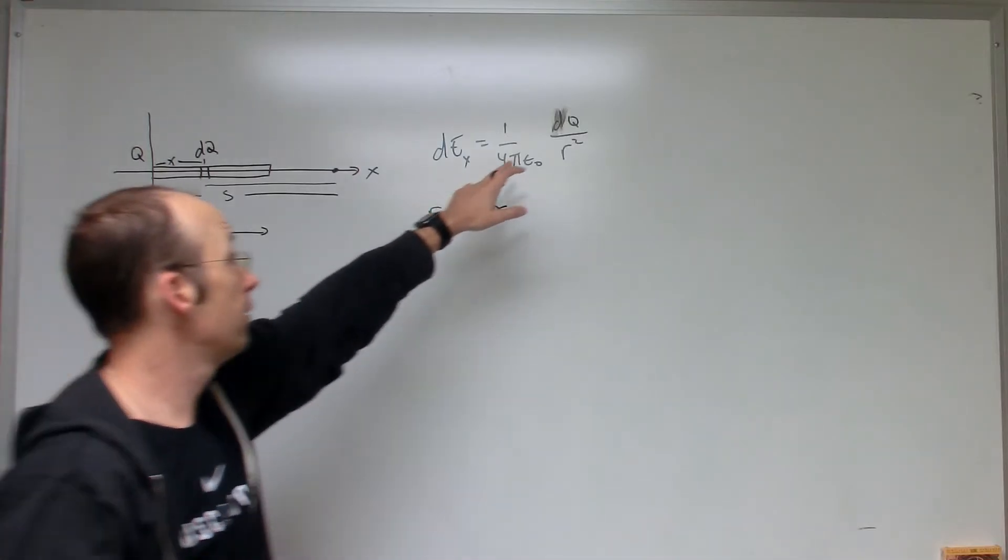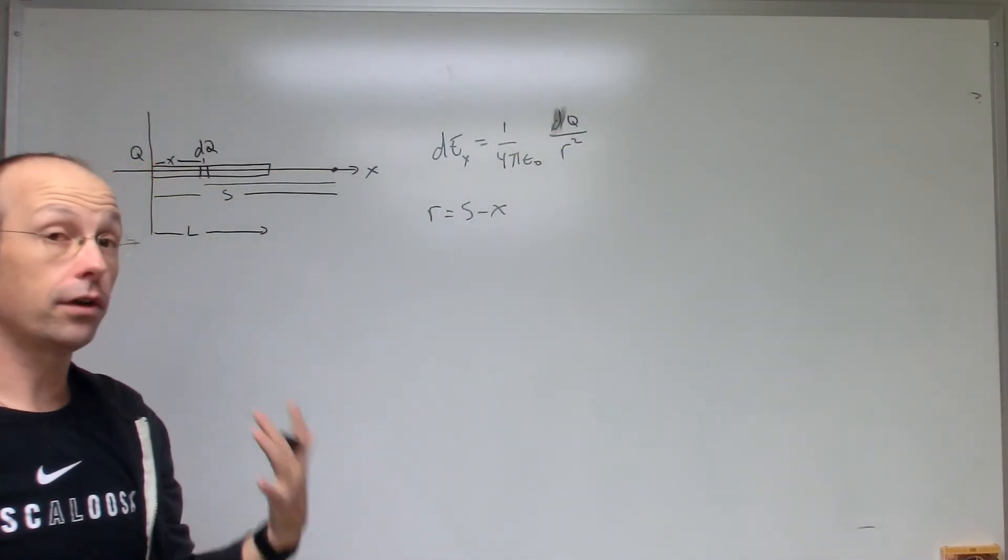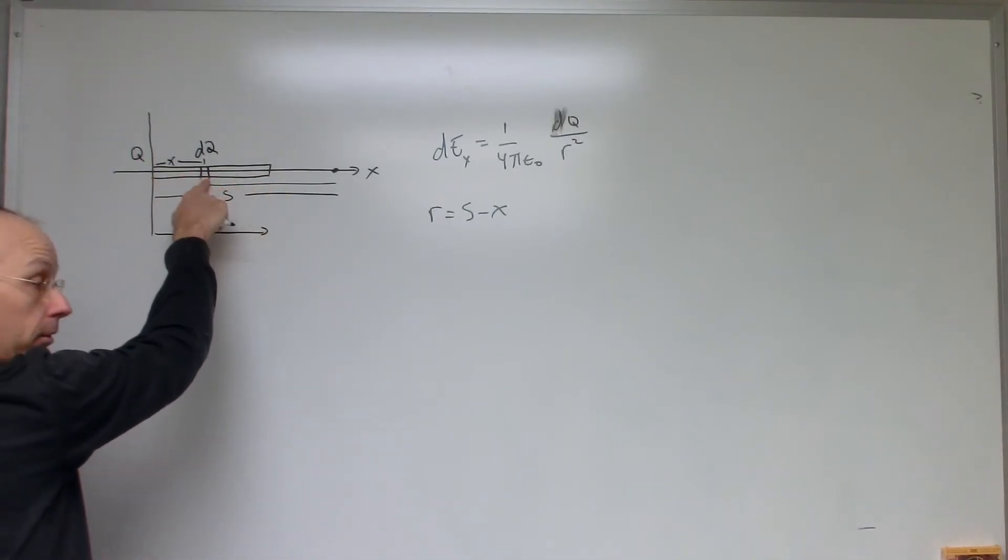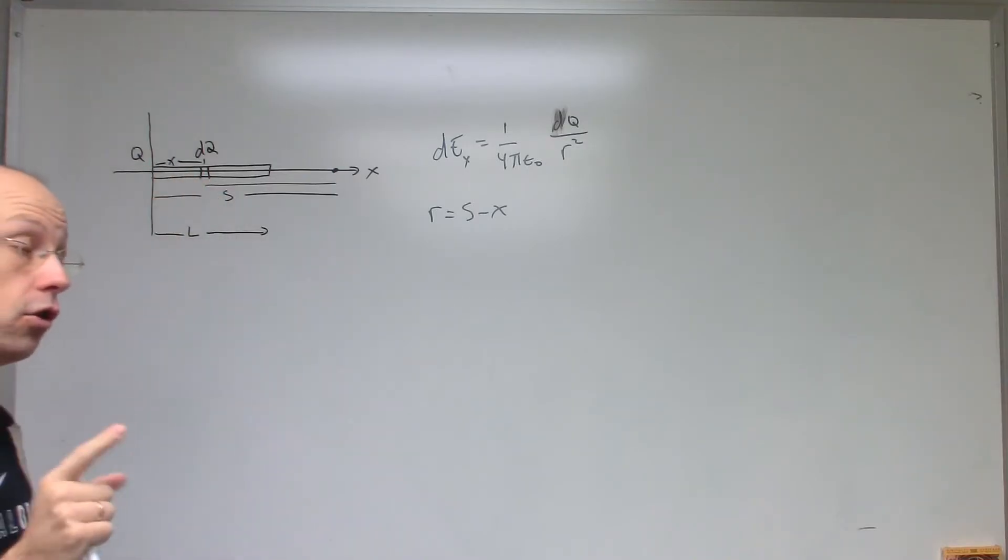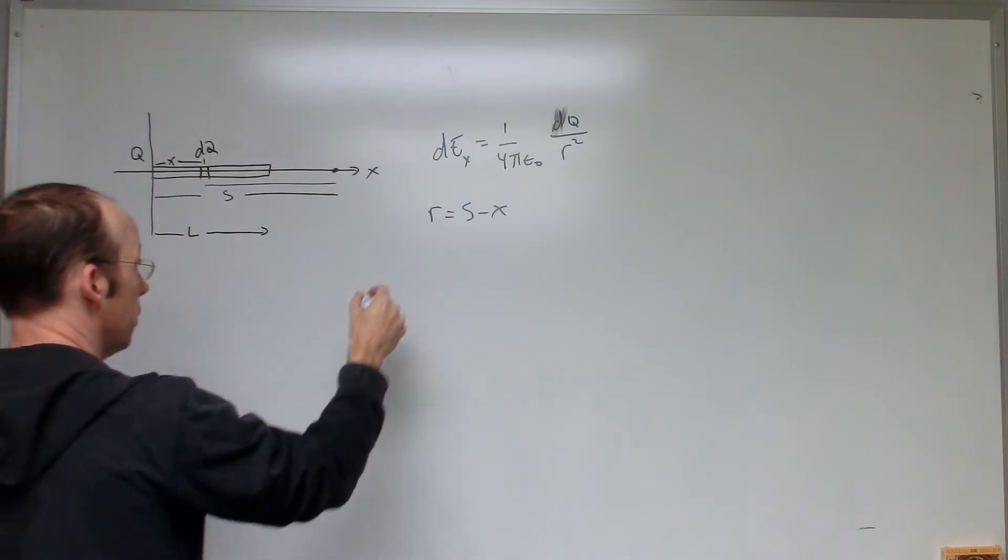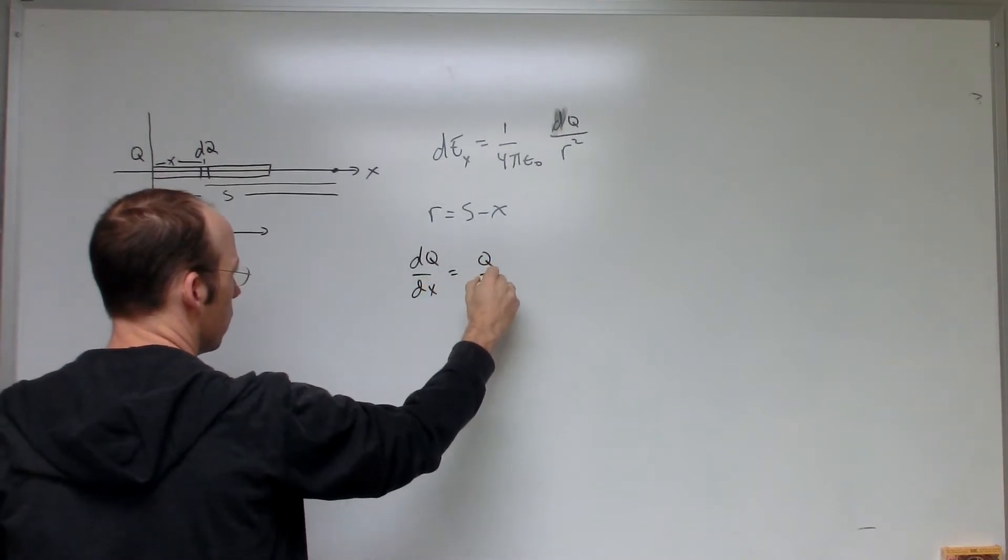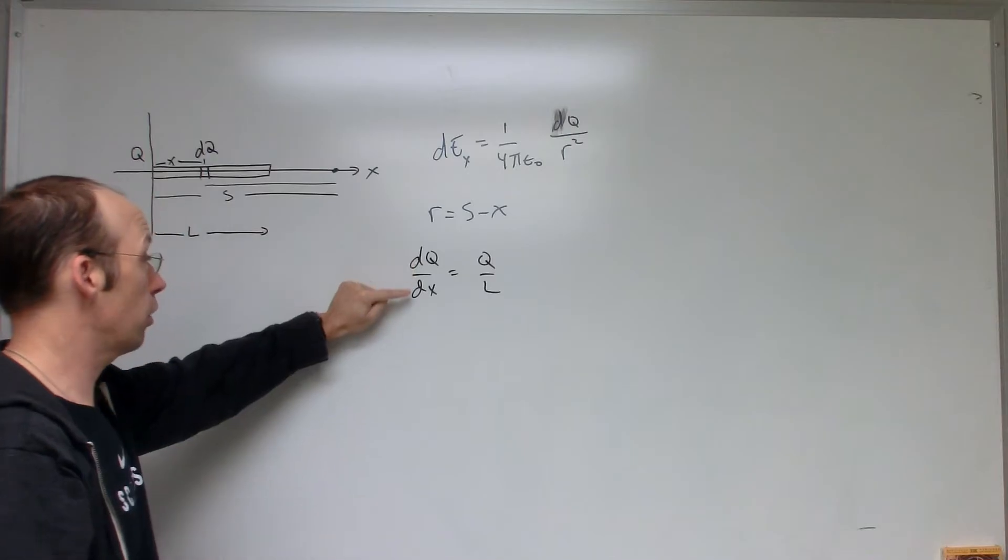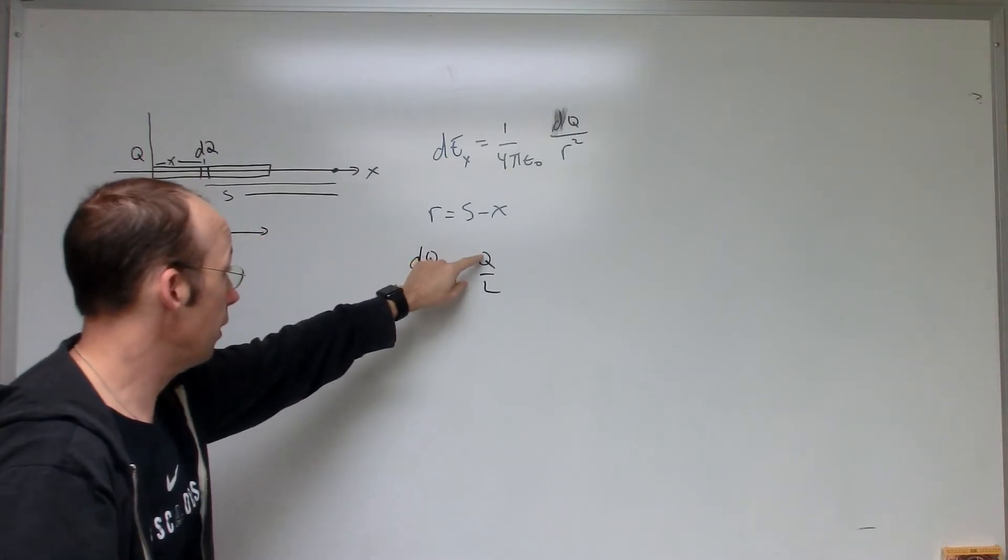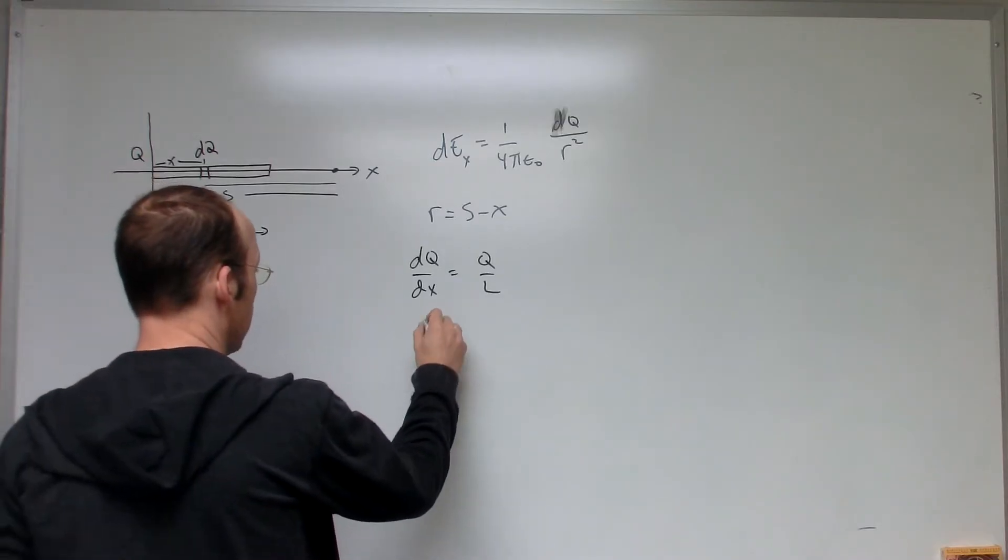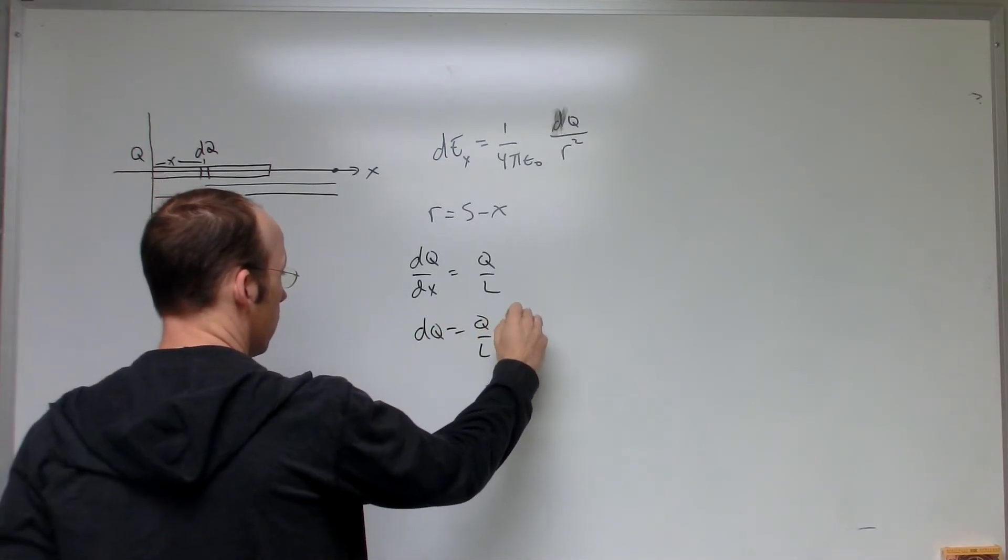Now, the other thing I need to do is get rid of this DQ. I'm not going to integrate over DQ. I'm going to add these pieces up in the X direction. So I need my integration variable in terms of DX. So now, if we assume that it has a uniform charge density, then this should be true. DQ over DX is Q over L. So the ratio of charge to length for the short piece is the same as the ratio of charge to length for the long piece. So that means that DQ equals Q over L DX.